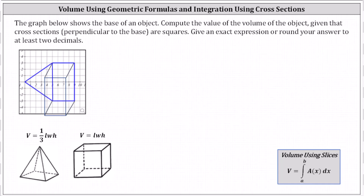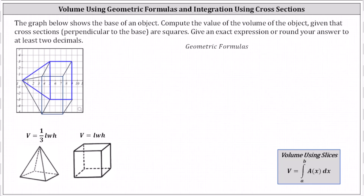Let's determine the total volume first using geometric formulas. The volume of a pyramid equals one third times the length times the width times the height, or one third times the area of the base times the height. The volume of the box or right rectangular prism is length times width times height. We'll have to use both formulas.